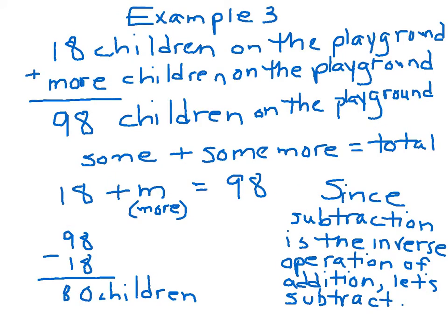Example 3. 18 children are on the playground because Cheryl counted them. Then all of a sudden the bell rings and there's a bunch more kids on the playground. Cheryl doesn't know how many kids came on the playground, but she does know that she counted 98. So she doesn't know how many came, but she knows that she started out with 18. Now she has 98. This is a sum plus some more. So we know sum, that's 18. We don't know the more. We have no idea how many more yet, but we do know the total, 98.